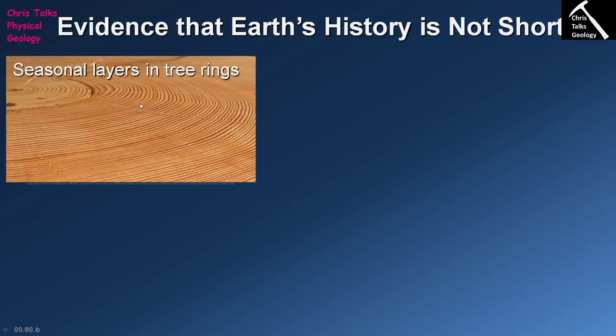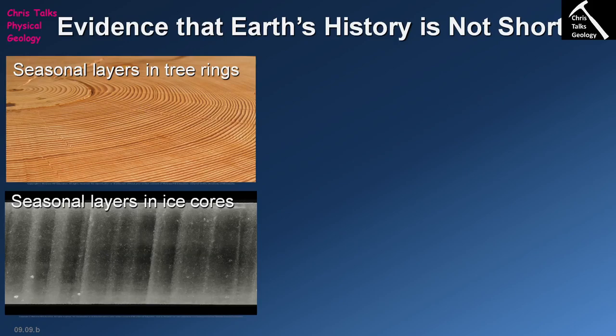If we look at tree rings, we can actually produce a sequence that gives us a dating record going back about nine thousand years. This tree ring record is obviously longer than the age range predicted by the Bible. We can also look at ice cores taken from areas of the earth that have been frozen for long periods of time, such as Antarctica or the Arctic.